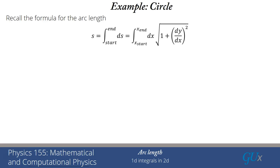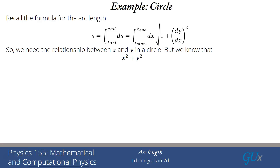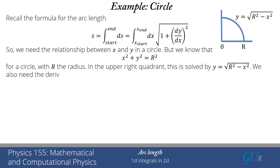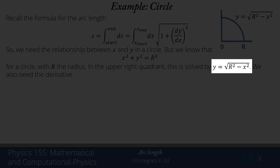Let's take a look at some examples. The first example is a circle. We know that x squared plus y squared equals r squared — that's the equation of a circle. We want to evaluate it in the right quadrant. Solving for y gives us y equals the square root of r squared minus x squared. If I want the upper right quadrant, I take x running from zero to some positive number, and y to be the positive root.